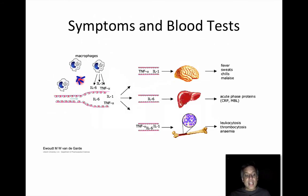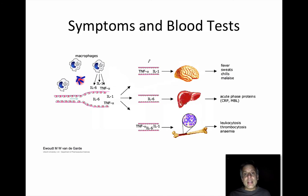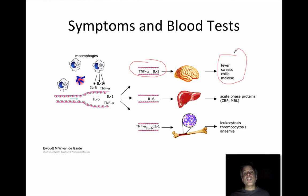Cytokines are also very important when it comes to our symptoms. If we are having a pro-inflammatory reaction to, let's say, an infection, we might get these pro-inflammatory cytokines — TNF-alpha and IL-1 — and these can trigger the brain to produce symptoms like fever, sweats, chills, and fatigue. That's very common with a viral infection.